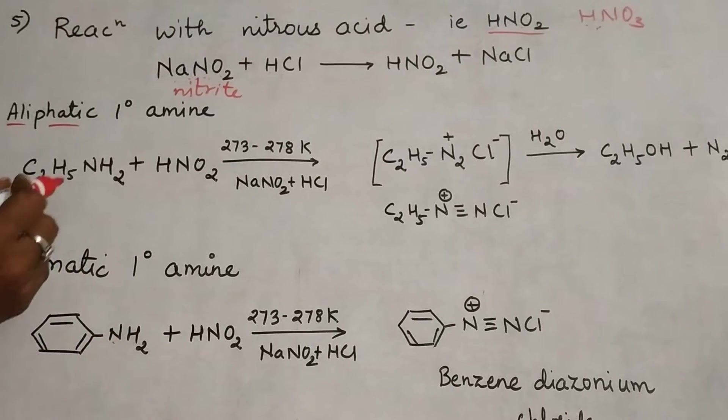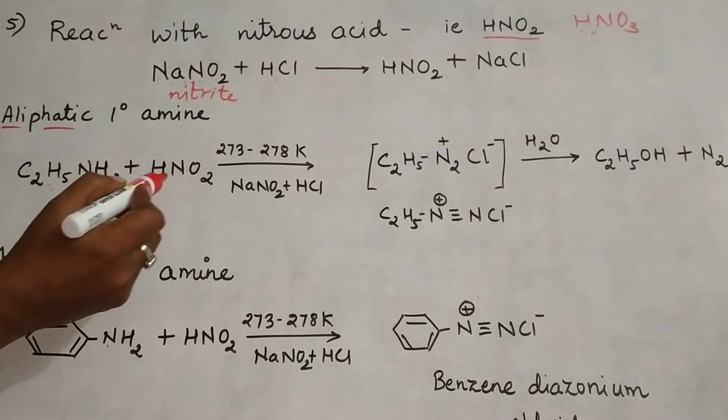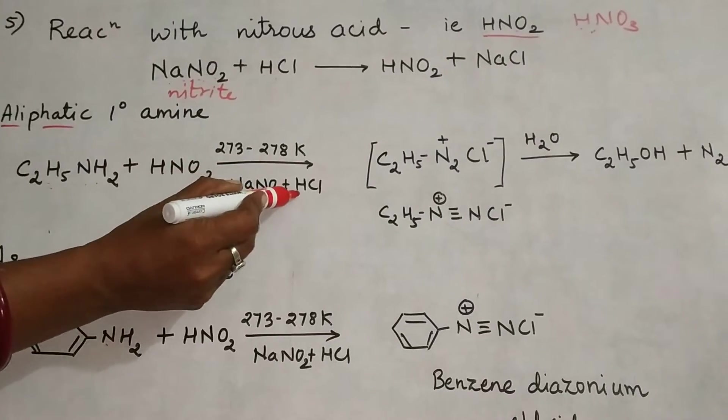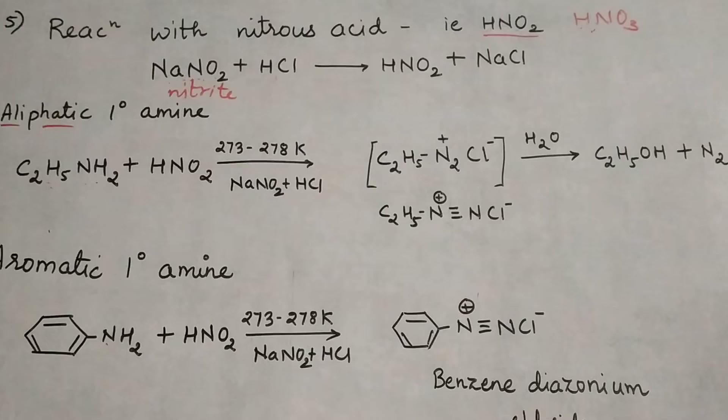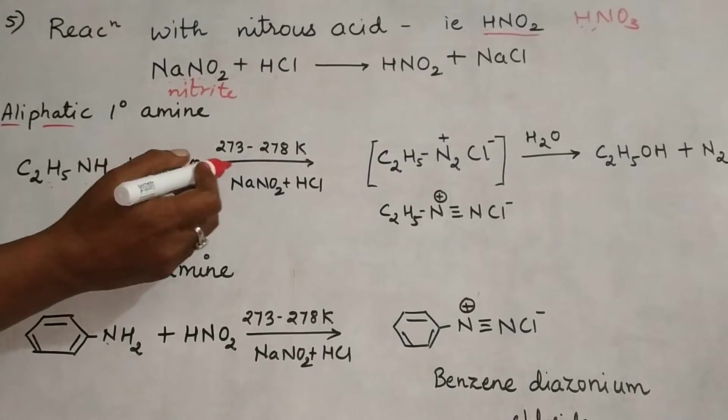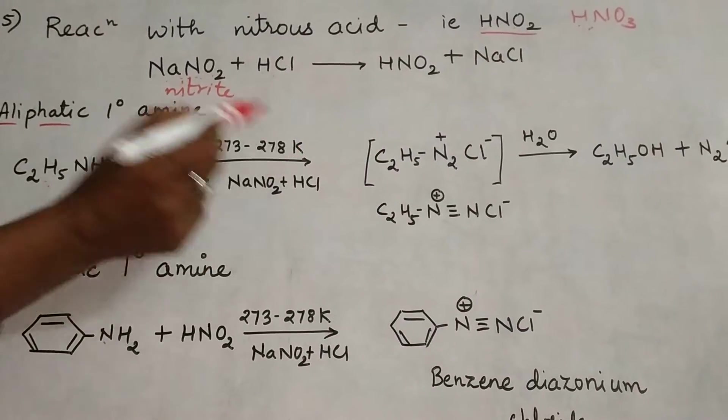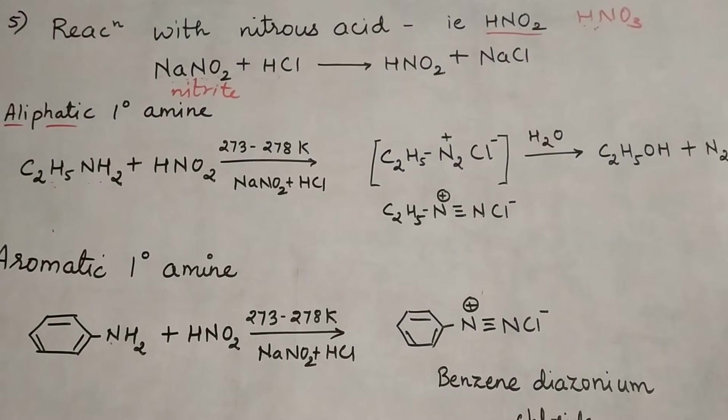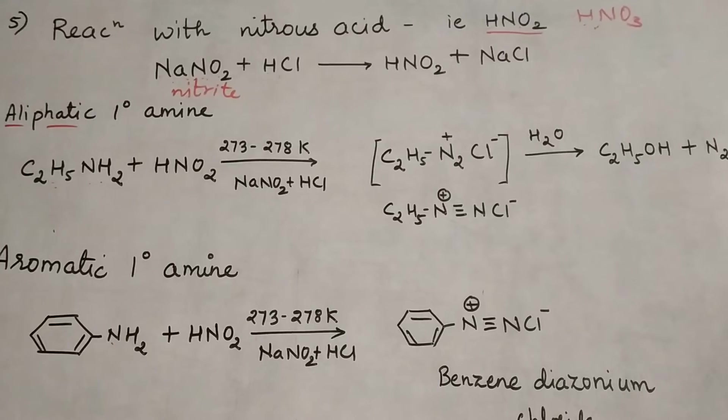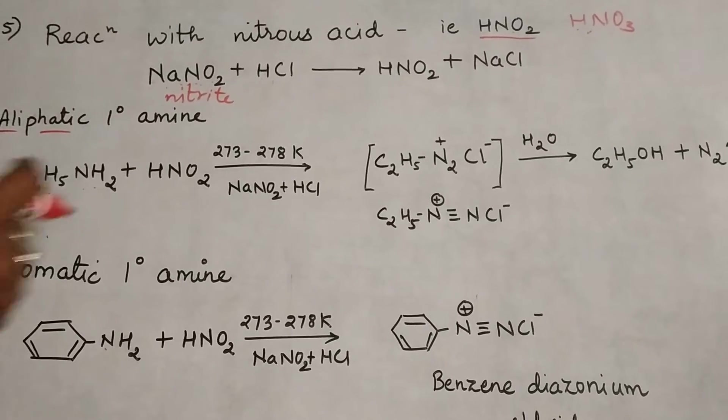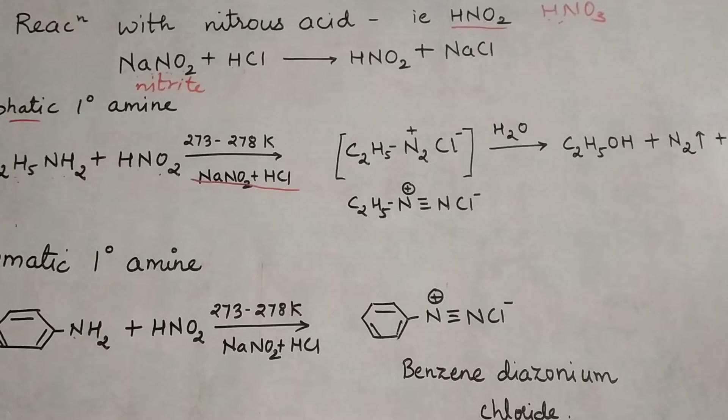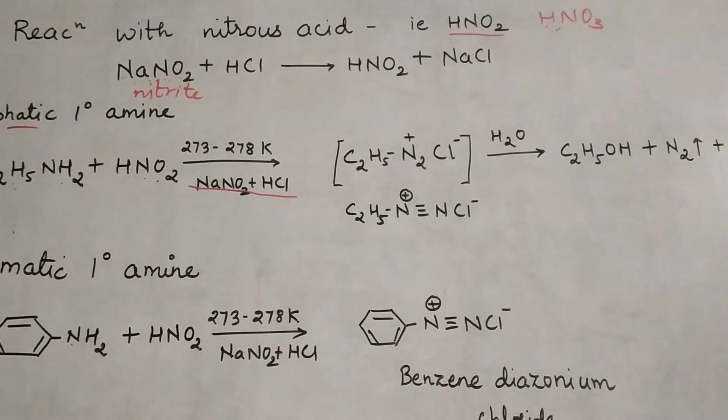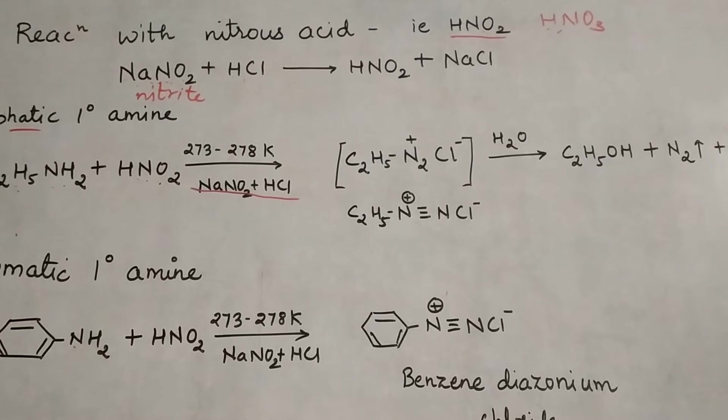Here, ethyl amine, a primary amine, is treated with NaNO2 and HCl. This reaction takes place in cold conditions at 273 to 278 Kelvin, which is 0 to 5 degrees Celsius—a low temperature.